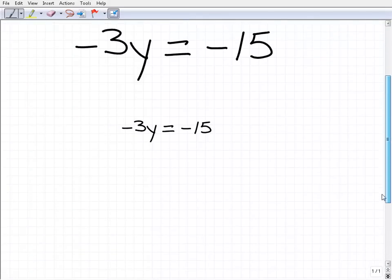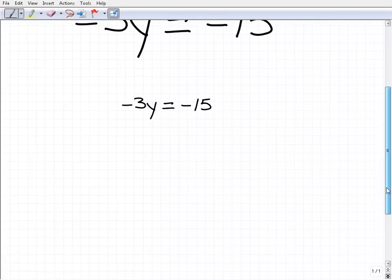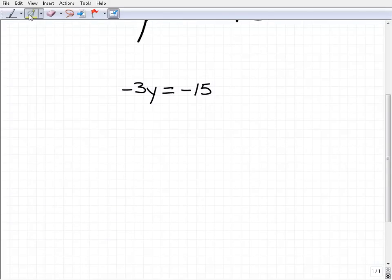Alright, so I have my equation down here and I'm going to explain this step by step. Now remember when you're solving an equation, the objective is to get the variable by itself on the left-hand side of the equation. So what we're looking to do is get y equals some number, and that number is our solution. That means we have solved the equation.